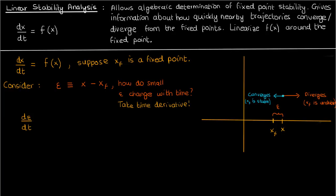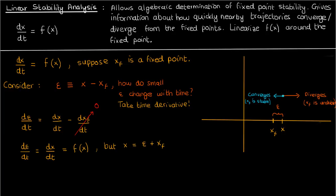Here, d(epsilon)/dt is dx/dt minus d(x_f)/dt, using just the definition of epsilon. The derivative of the fixed point is obviously 0 because the fixed point is just a constant. So the derivative of epsilon is just dx/dt, which we already know is f(x). But we know that x is just epsilon plus x_f from the definition of epsilon, so d(epsilon)/dt is just f(epsilon + x_f).